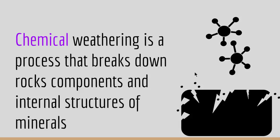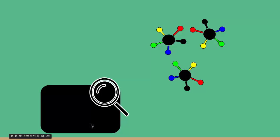In the previous video we looked at mechanical weathering. We saw how by different factors mechanical weathering breaks down big rocks into smaller pieces. But on the other side, chemical weathering is not like mechanical weathering. Chemical weathering actually goes into the rock and it breaks down the rock's components and internal structures of minerals. So if we look at a rock under a microscope, we see that it is composed of different minerals and chemical components. What chemical weathering does is it breaks these chemical components and mineral structures, and by that you get the rock unit to break down.